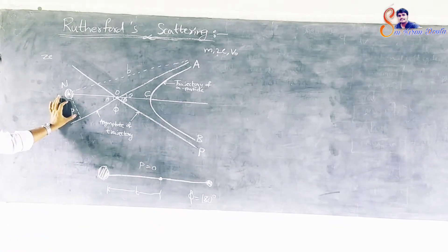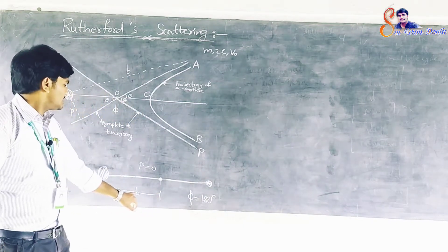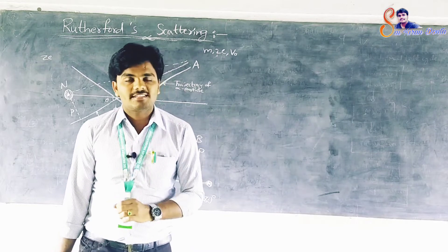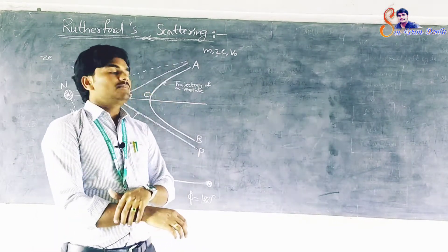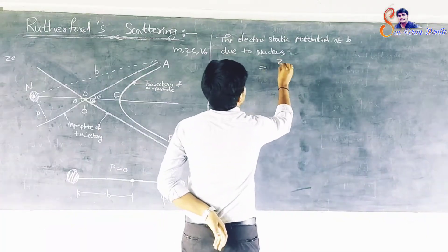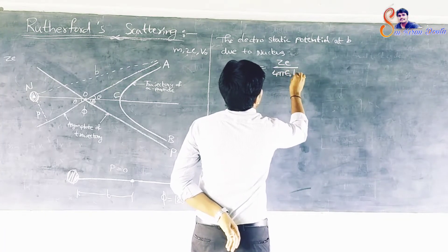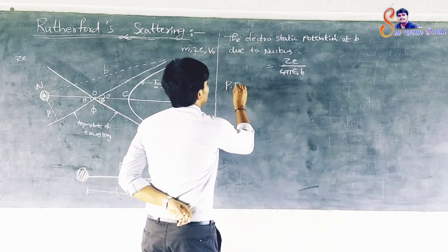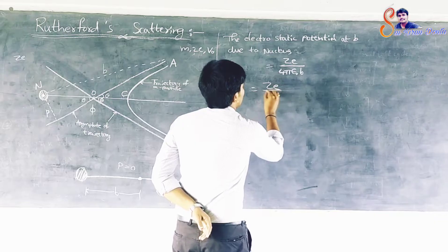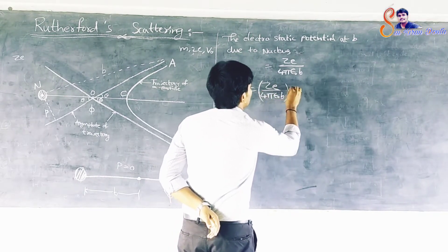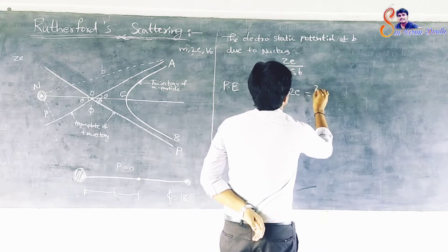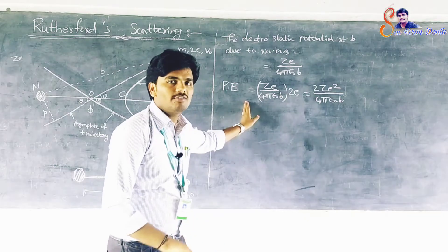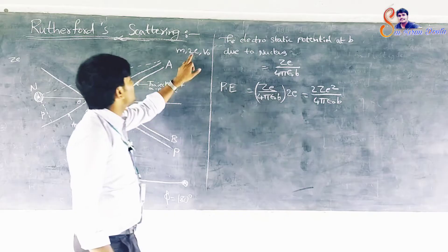Distance B is known as the distance of closest approach. The value of B can be determined by considering the principle of conservation of energy. The electrostatic potential at a distance B due to the nucleus is Ze by 4πε₀B. Hence, the potential energy of an alpha particle at a distance B from the nucleus is Ze by 4πε₀B multiplied by 2e, which results in 2Ze² by 4πε₀B, where 2e is the charge on the alpha particle.